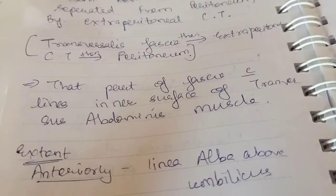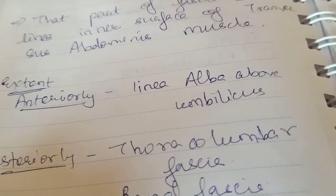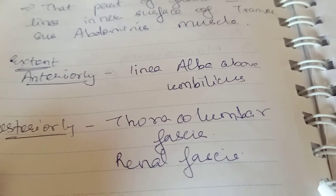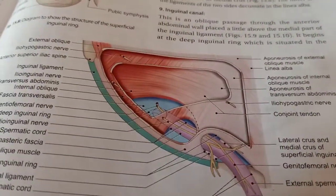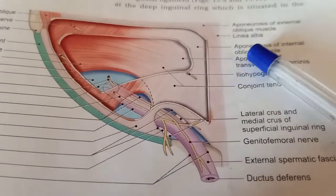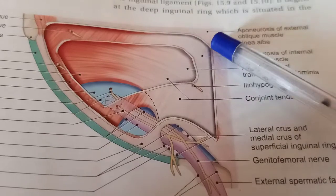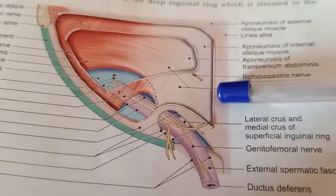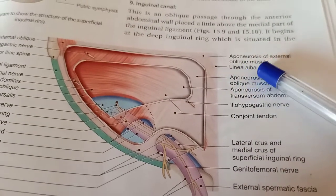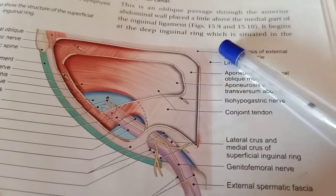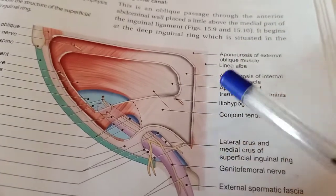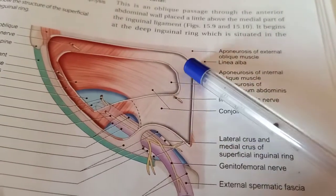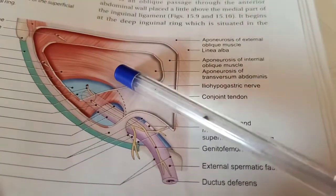What is the extent of this fascia? Anteriorly would be the linea alba and the umbilicus. In the diagram, you can see the linea alba, then the aponeurosis of the external oblique muscle uniting in the midline forming the rectus sheath and linea alba, then the aponeurosis of internal oblique, then the aponeurosis of transversus abdominis.